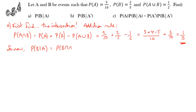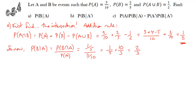Now we use the multiplication rule for B given A: that equals the intersection of B and A divided by the probability of A. Using the intersection we just worked out — one fifth — divided by the probability of A, which is three tenths, that simplifies down to two thirds. That's part A.